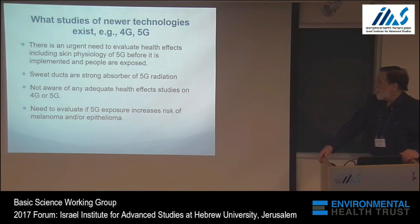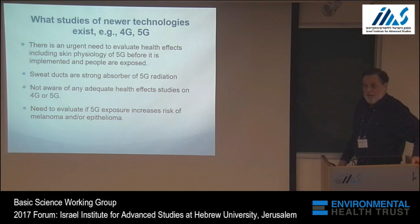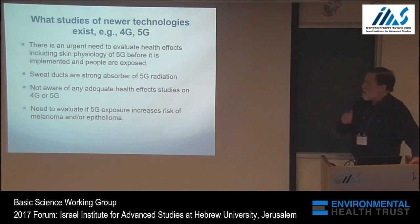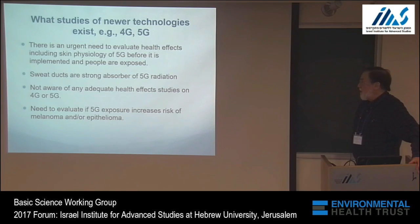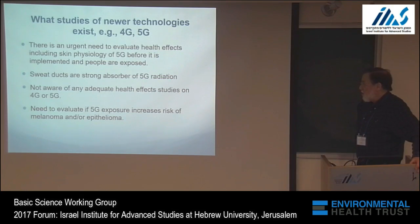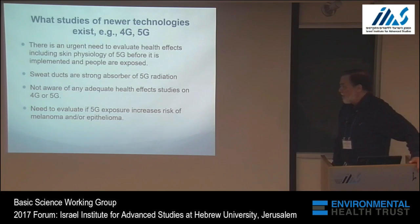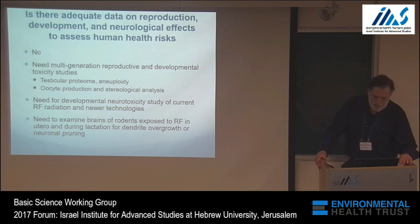There is an urgent need to evaluate health effects including the skin physiology of 5G before it is implemented and people are exposed. Here we are again going into a new technology without any knowledge of what it might mean for health. We know that sweat ducts are very strong absorbers of 5G radiation, but we're not aware of any adequate health effects studies on 4G or 5G. We need to evaluate whether 5G increases the risk of skin diseases such as melanoma or epithelioma, and examine brains of rodents exposed to RF in utero and during lactation for dendrite outgrowth, since this may be linked to autistic syndrome.